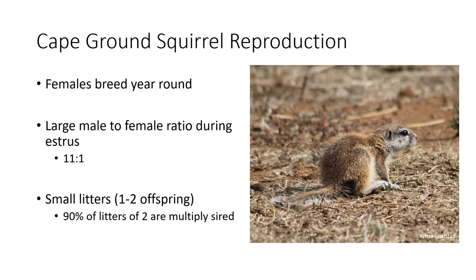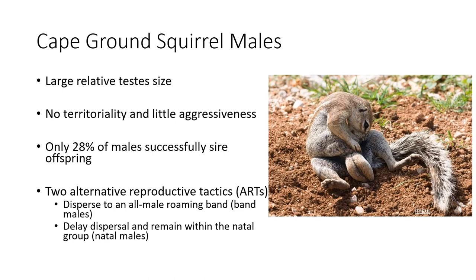Continuing with females, they breed year-round, entering spontaneous periods of estrus where males will outnumber them on average 11 to 1. While they give birth to small litters, 90% of litters of two are multiply sired by different males.